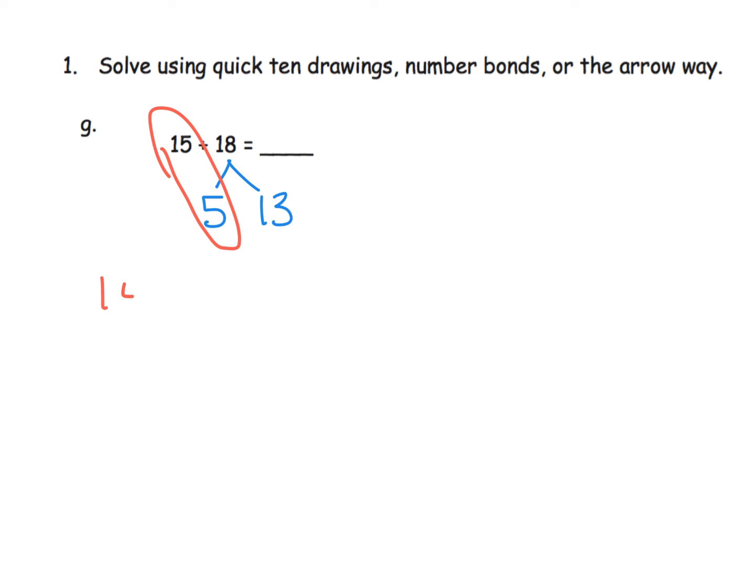So that tells me that 15 plus 5 is 20. So there's our next 10. Then I'm going to take that 20 and I'm going to add in this 13 that's still left out there. So 20 plus 13.